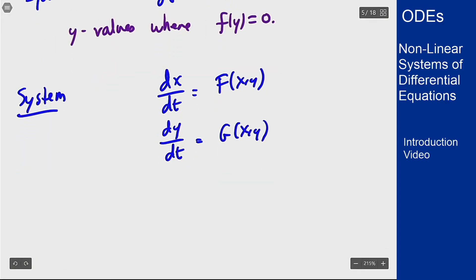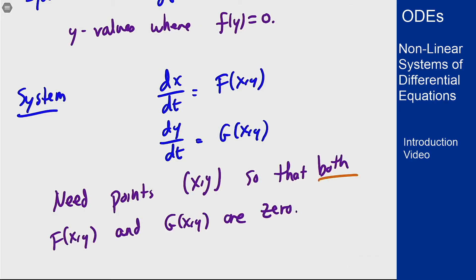So we need points (x, y) so that both f and g are zero. We're going to be able to simultaneously solve these two equations at the same time. Ideally that results in just factoring the equations and then sort of seeing how the terms match up.